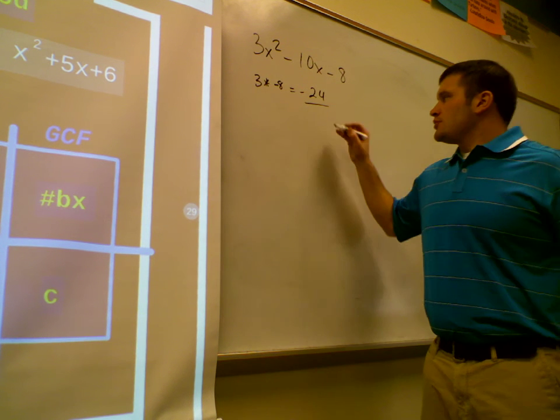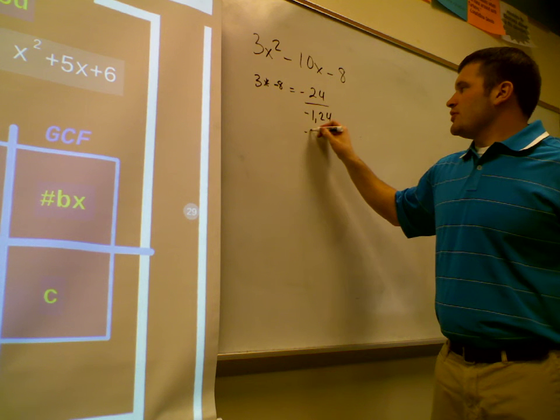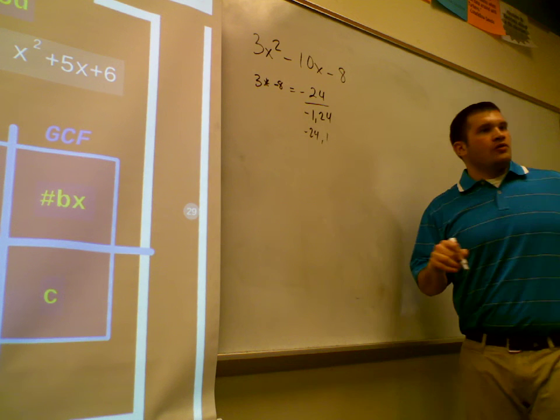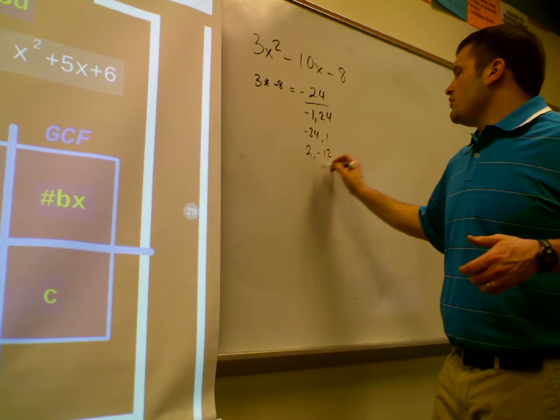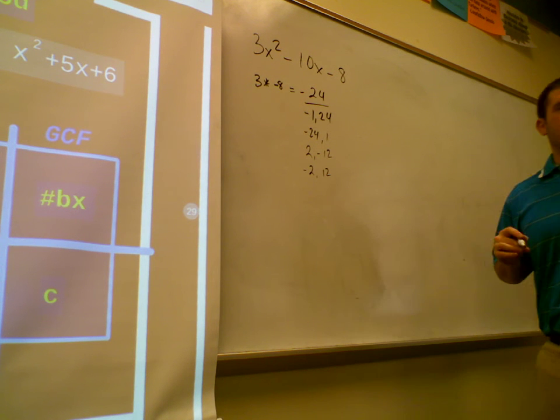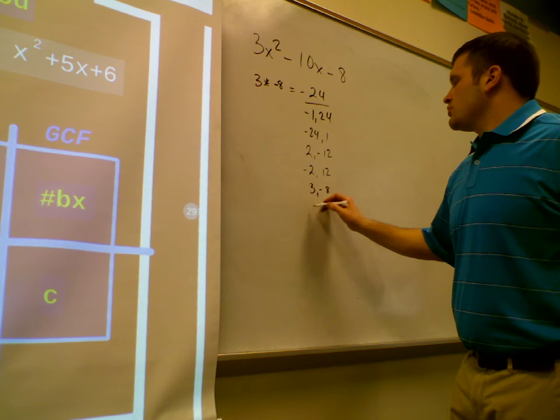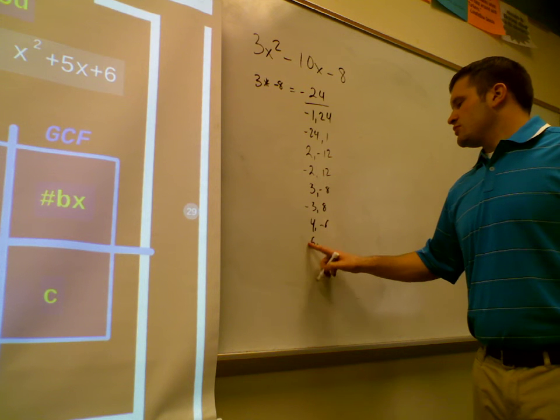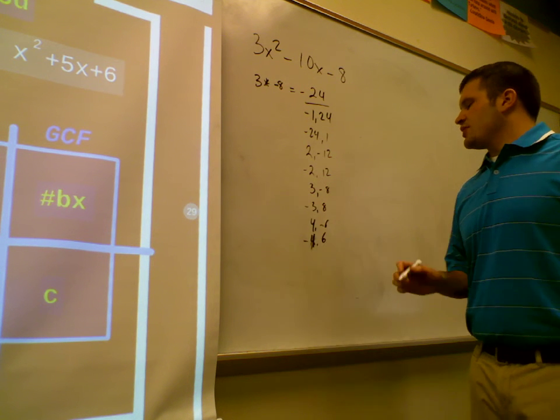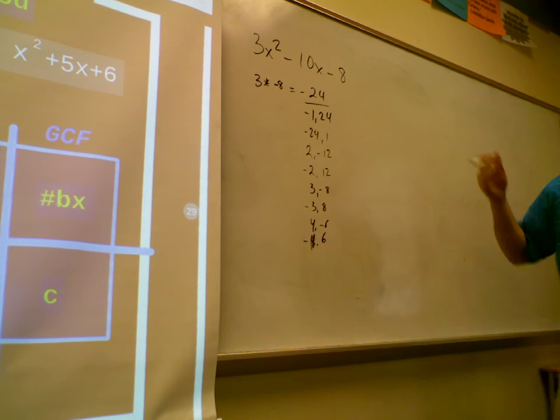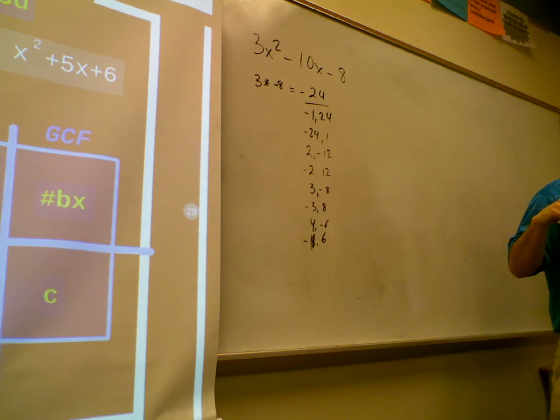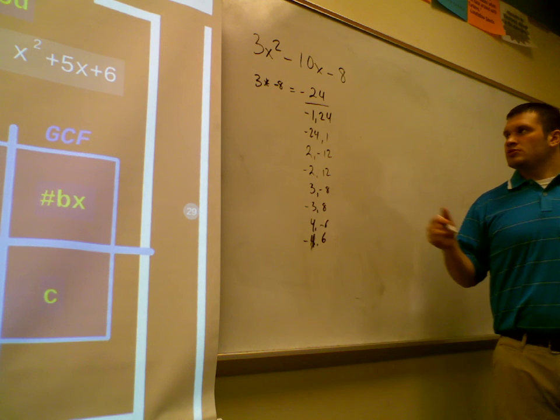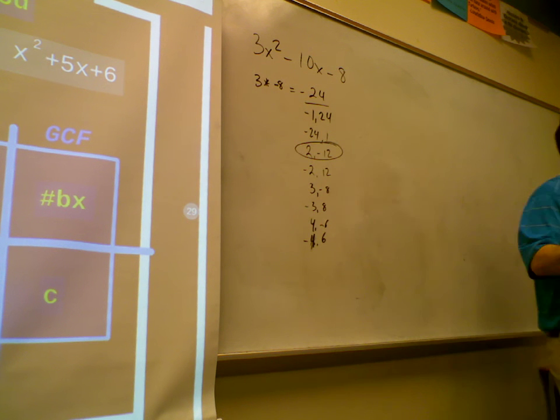Okay, what are some factors? Negative 1 and 24, negative 24 and 1. Don't forget your negatives guys, they're important. What else? 2 and negative 12, negative 2 and 12. 3 and negative 8. Negative 3 and 8. 4 and negative 6. Now, some of you are saying, why did you write down the rest? I know the answer already. If you get to a spot where you know the answer, you don't have to keep going. You can stop there. So, which factors work? 2 and negative 12. So, once you get to here guys, if you don't want to keep going, that's fine.